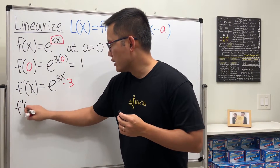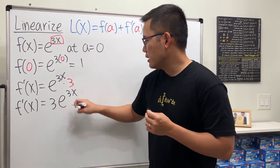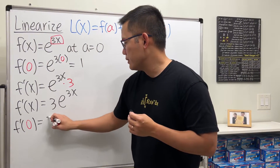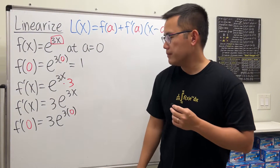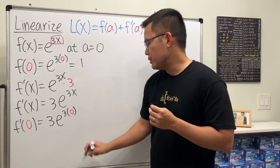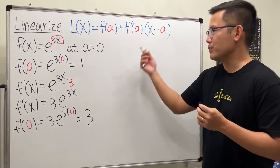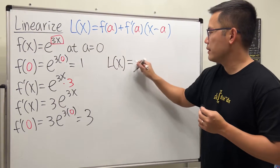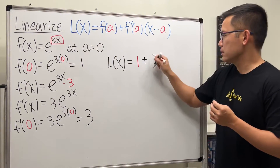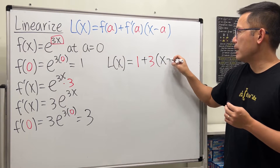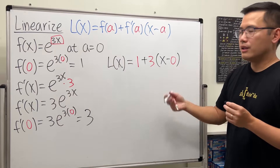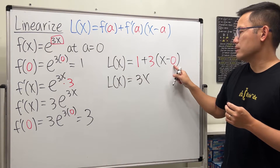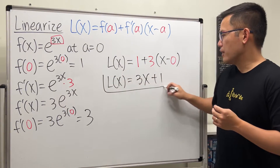So f prime of x is 3 times e to the 3x. Plugging in zero: f prime of 0 equals 3 times e to the 3 times 0, which is just 1 multiplied by 3, giving us 3. Now we have all the ingredients. L of x equals f of a, which is 1, plus the derivative 3, times x minus a which is 0. Simplifying: L of x equals 3x plus 1.